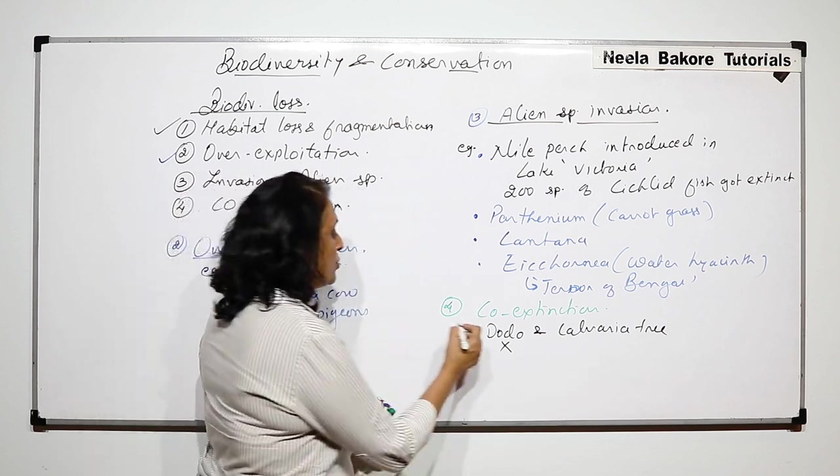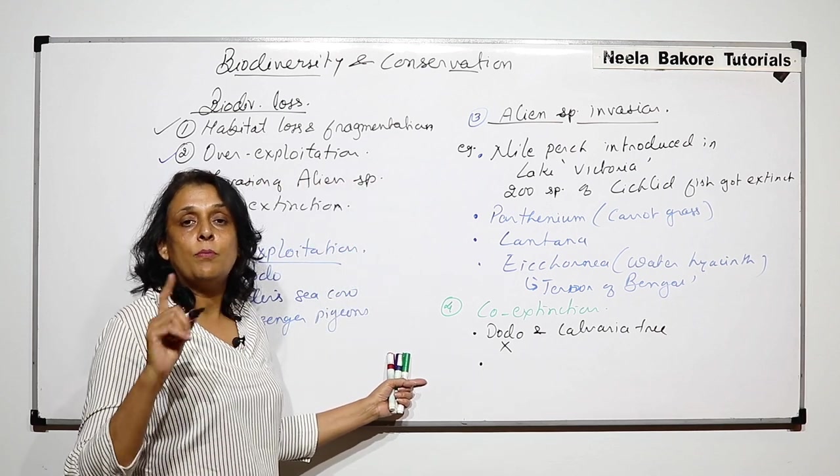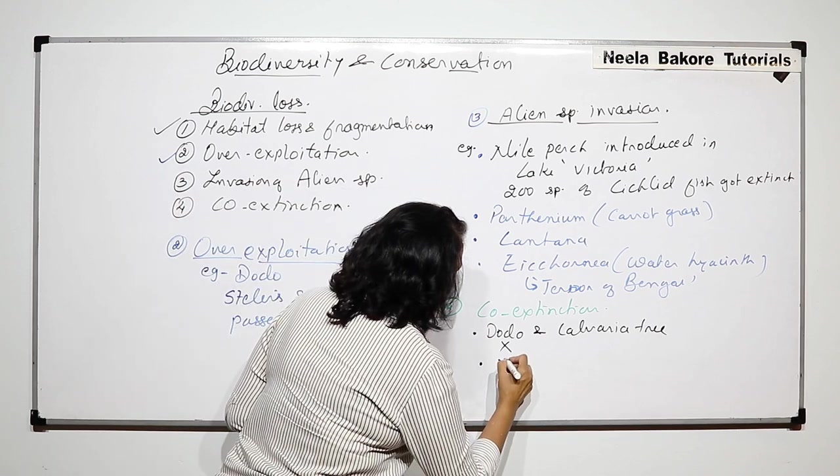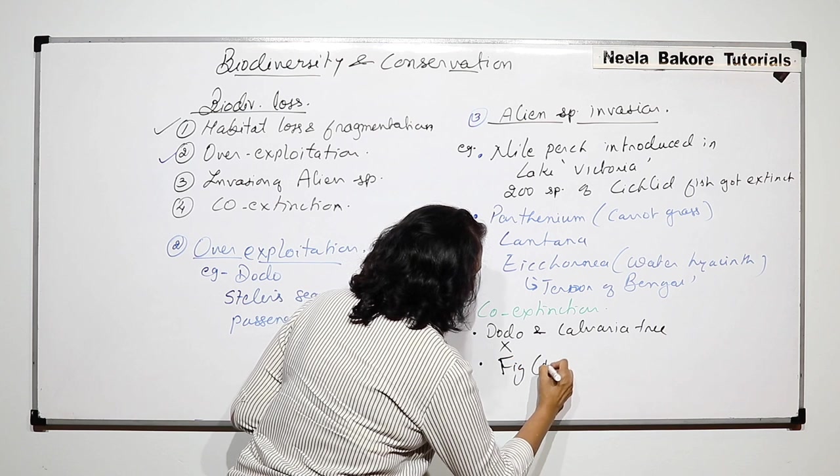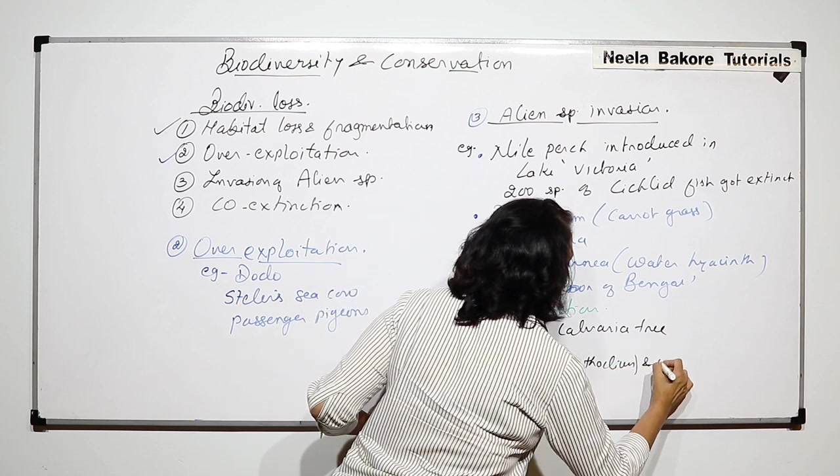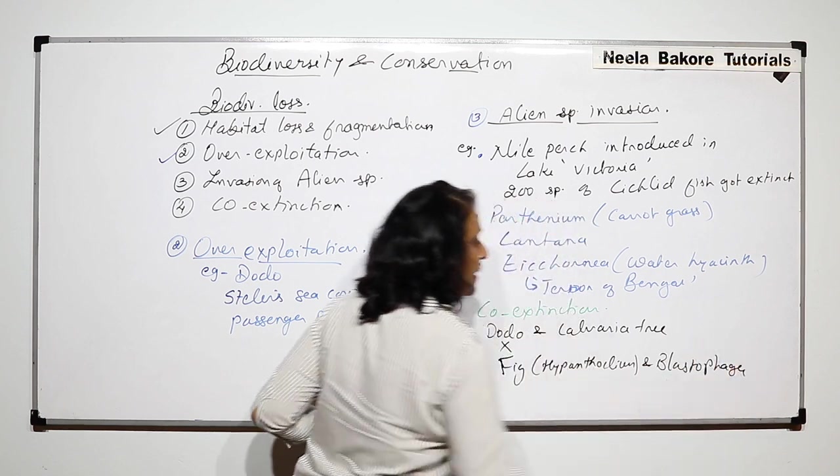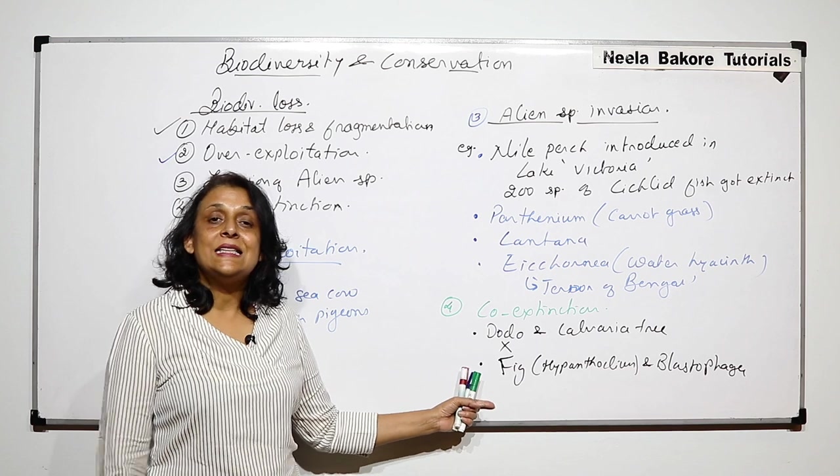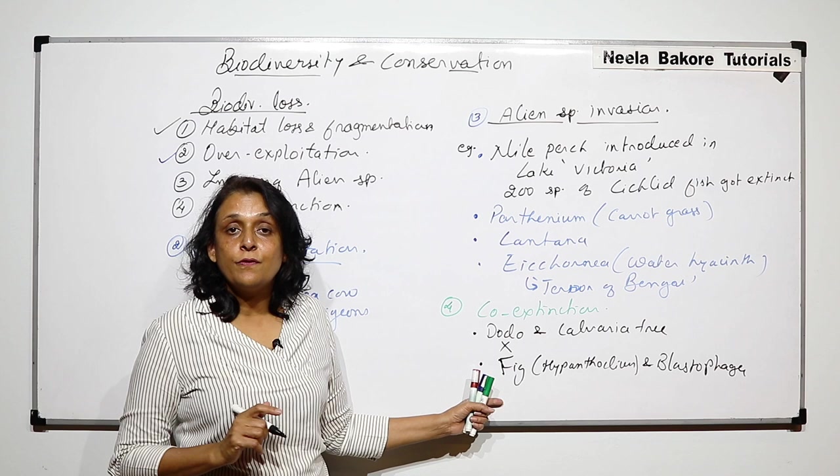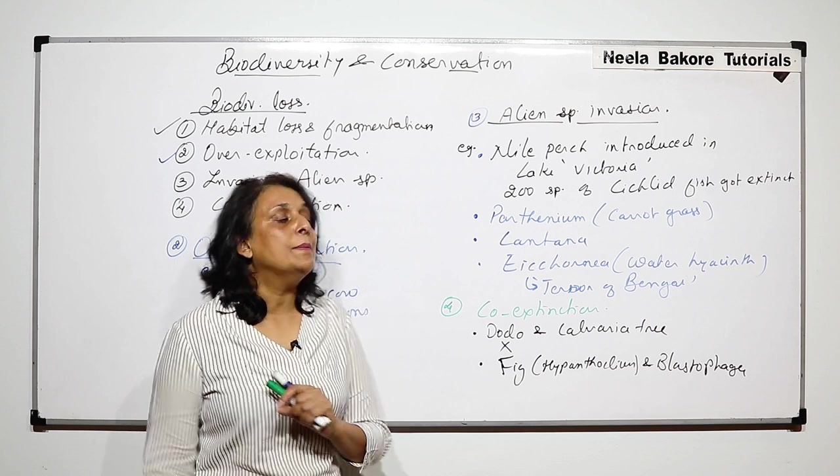We have also studied some examples when we talk of pollination-pollinator relationship. One was fig, that is hypanthodium, and Blastophaga. Blastophaga lays its eggs inside that hypanthodium. In hypanthodium there are three types of flowers: the male flowers, the fertile female flowers, and the sterile female flowers.